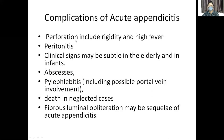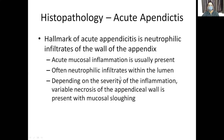Complications of acute appendicitis include: perforation if untreated, peritonitis after perforation (inflammatory cells spreading into the peritoneal cavity), abscess formation, pylephlebitis, and in neglected cases, death due to septicemia and shock. Fibrous luminal obliteration may be a sequela of previous appendicitis.